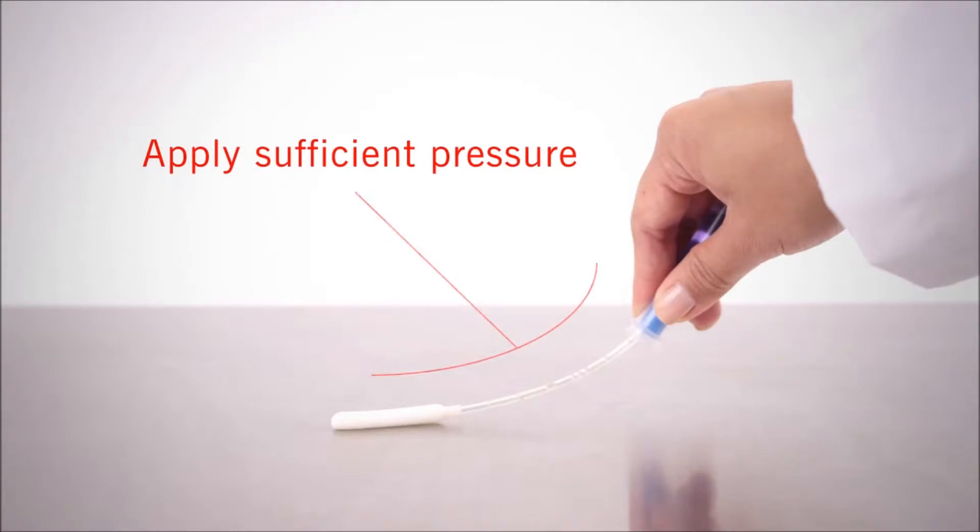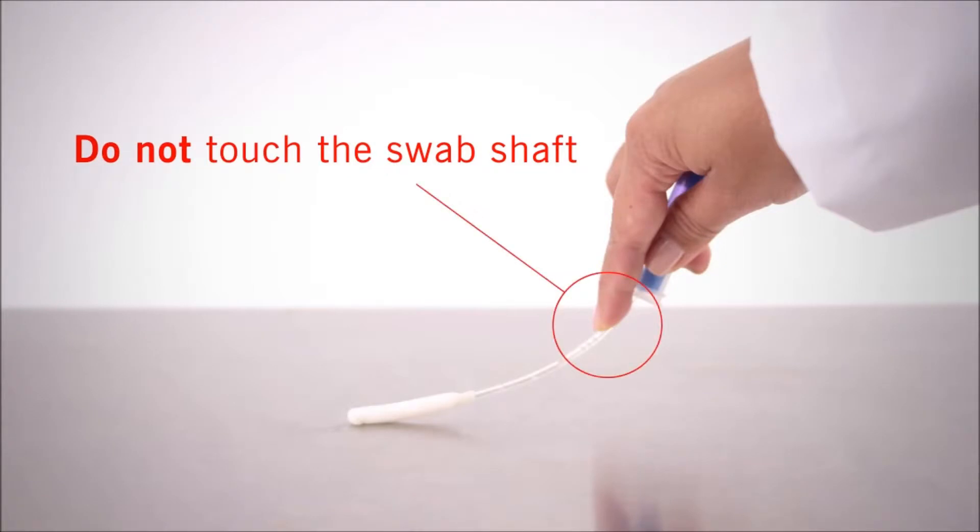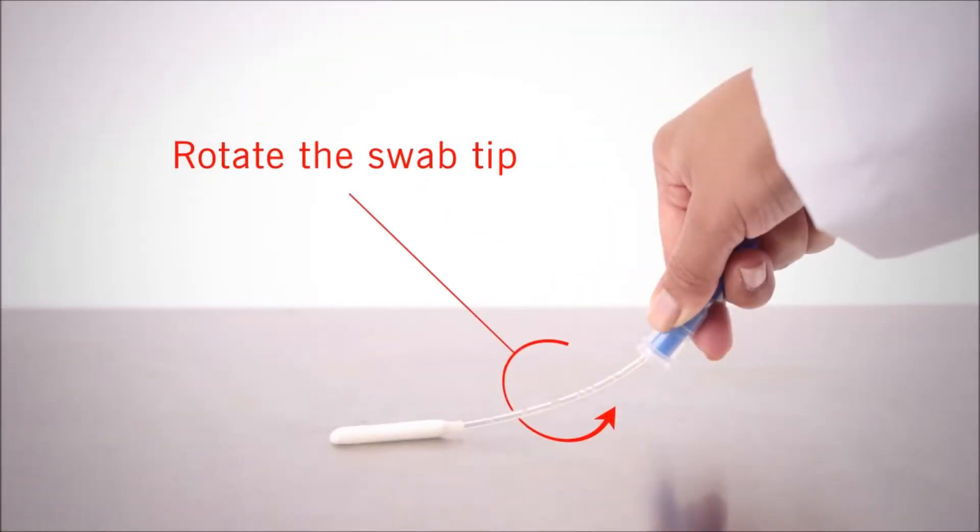Apply sufficient pressure in the swab shaft to maximize sample collection and improve the accuracy of test results. Be sure not to touch the swab shaft when collecting sample. Touching the swab shaft contaminates the test and may produce inaccurate results. Rotate the swab tip while swabbing to ensure maximum sample collection.